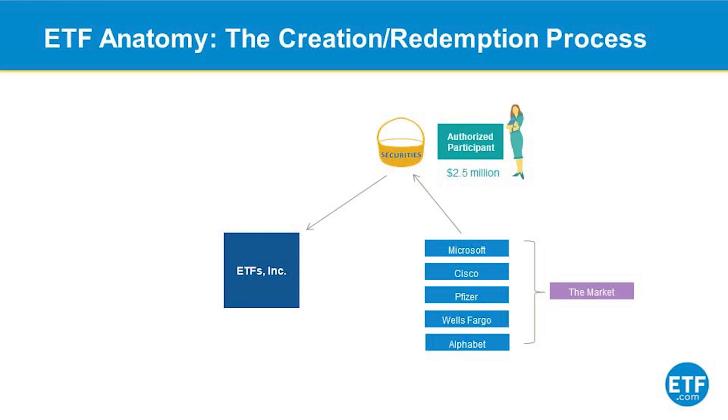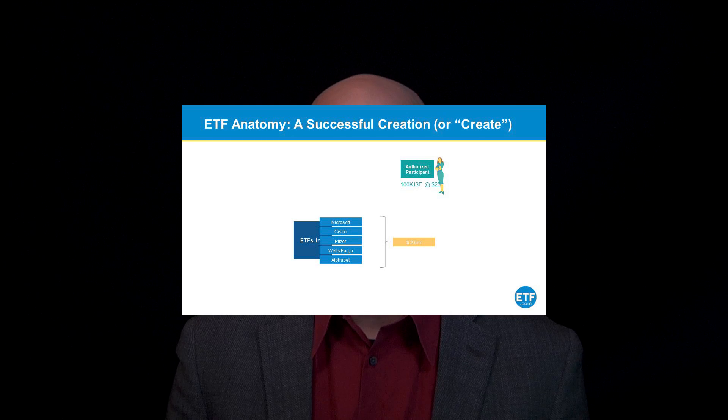ETFs introduce a new participant in this process — the authorized participant. So called because they're the only ones authorized to make and get rid of new shares of the ETF. The ETF company gives them a list and says, here's all the things that we want to own. And so the authorized participant goes out to the marketplace, they buy everything on that shopping list, and they simply hand that over to the ETF company. In return, the ETF company hands back a basket of shares of the ETF.